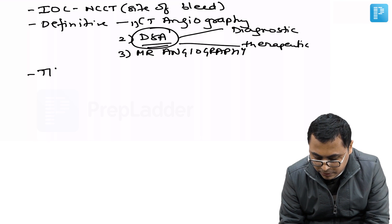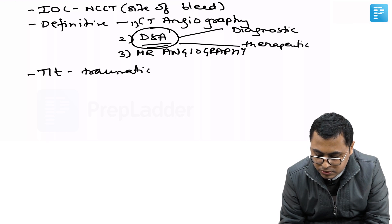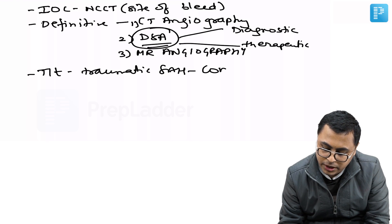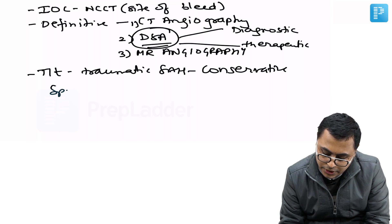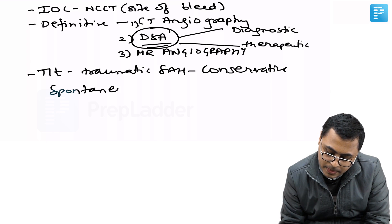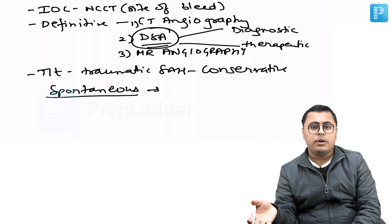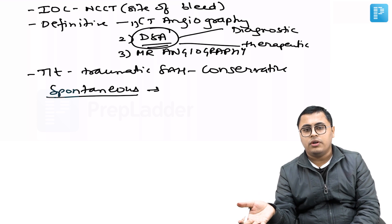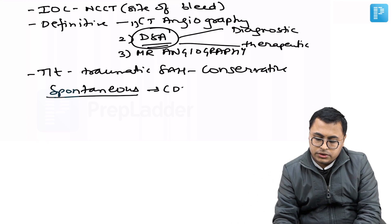Now treatment: if it is traumatic subarachnoid hemorrhage, mostly conservative management. If spontaneous, we go for the above investigations: CT angiography, DSA, or MR angiography. If these are negative, then again we have to manage conservatively.